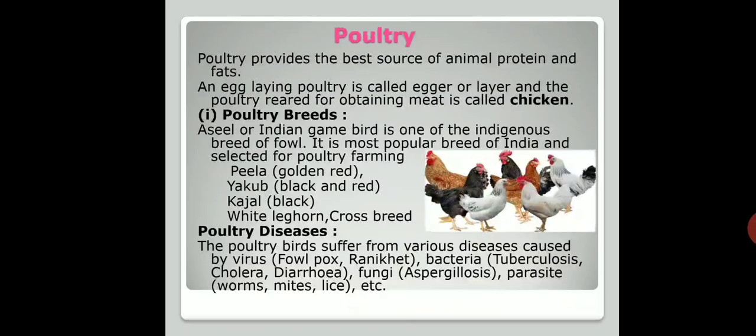The next part is poultry. Poultry is a source of animal protein and fats. Poultry reared for obtaining eggs are called layers, and those reared for obtaining meat are called broilers or chicken. Poultry breeds like Asil and Indian Game are indigenous breeds of fowl. Selected popular varieties are used in poultry farming.